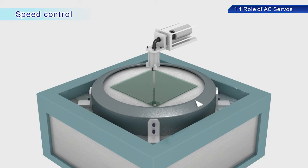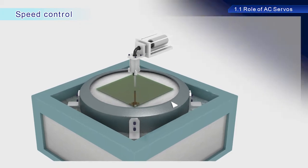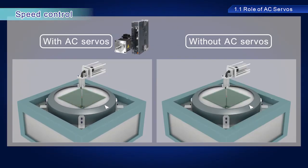What would happen in this scenario without the use of AC servos? If the rotational speed is too high, the solution will fly off of the substrate. If the speed is too low, the solution will not spread evenly. AC servo speed control ensures accuracy of processing through stable rotation at the proper speeds, in accordance with the applicable devices.